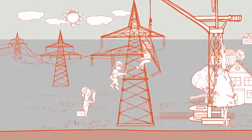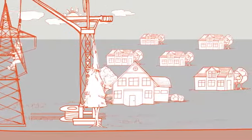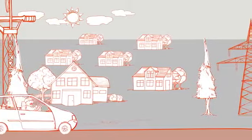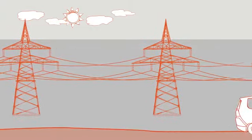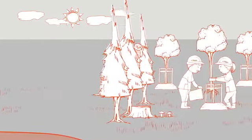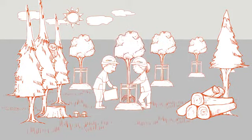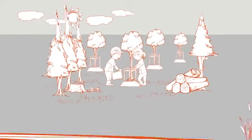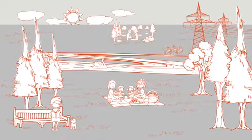When 50 Hertz decides to build new lines, we respect certain rules. We avoid residential areas wherever possible, bundle the lines with other infrastructures such as streets or railways and try to affect natural areas as little as possible. We compensate any environmental impact. Protecting human beings, wildlife and nature is our highest priority.